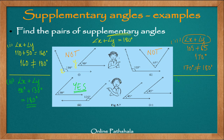For the fourth example, angle X plus angle Y equals 45 degrees plus 45 degrees. The measure of both angles is 45 degrees, and when I add them, it comes out to be 90 degrees. Since 90 degrees is not equal to 180 degrees, these are not supplementary angles. In fact, these two when added are complementary angles, because their sum equals 90 degrees.